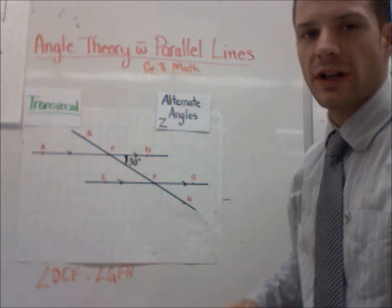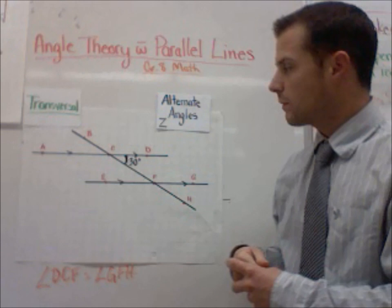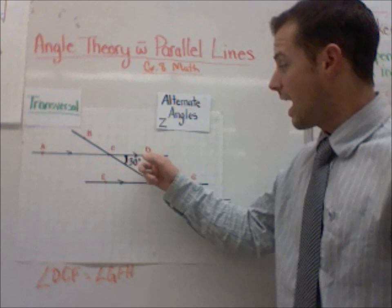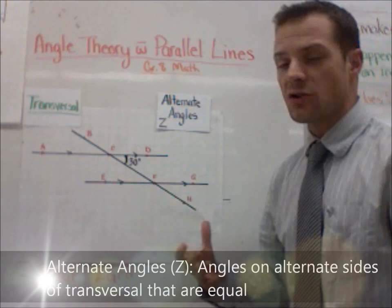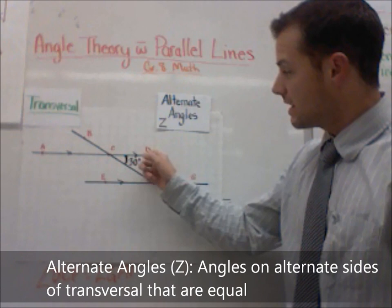The first thing I want to look at is something called alternate angles. Alternate angles form a Z pattern when you're looking at this. So essentially, what you would do is you could say, I know this one is 30 degrees. I know that angle DCF is 30 degrees. Well, if I look at this Z pattern, alternate angles are angles that are equal to each other in this Z pattern.